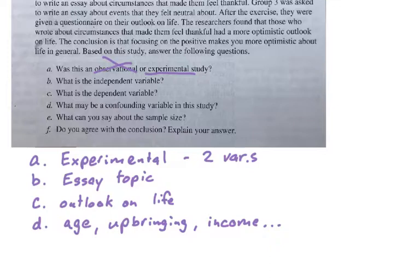Part D. What may be a confounding variable in this study? There may be many different things: the age of the subjects, their upbringing, their income levels, and so on and so forth. All of these different things might be influencing factors on their life outcome that is not really controlled for in terms of just the essay topic that they were instructed to write.